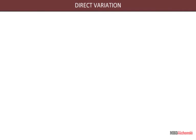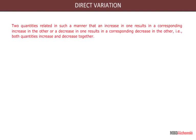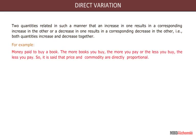Direct variation: two quantities are related in such a manner that an increase in one results in a corresponding increase in the other, or a decrease in one results in a corresponding decrease in the other — that is, both quantities increase and decrease together. For example, consider money paid to buy books. The more books you buy, the more you pay; the less you buy, the less you pay. So, price and commodity are said to be directly proportional.